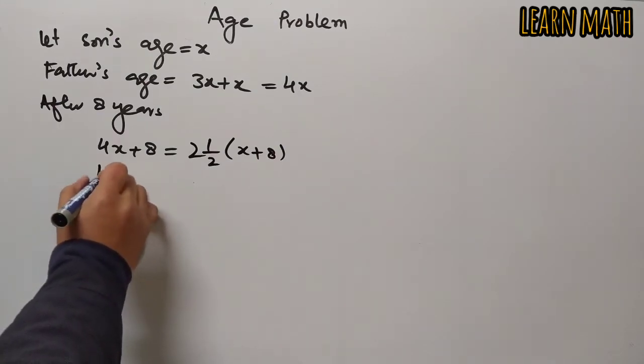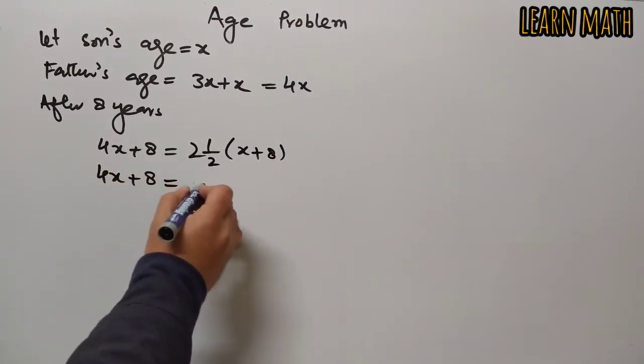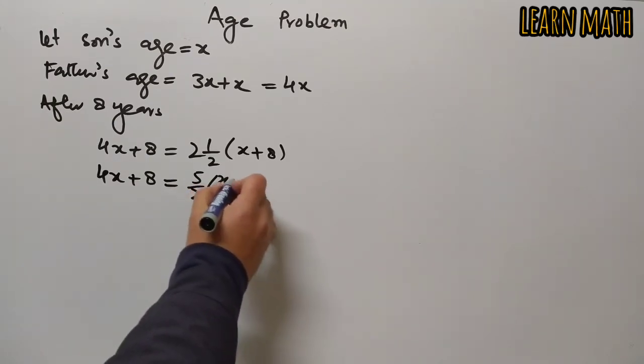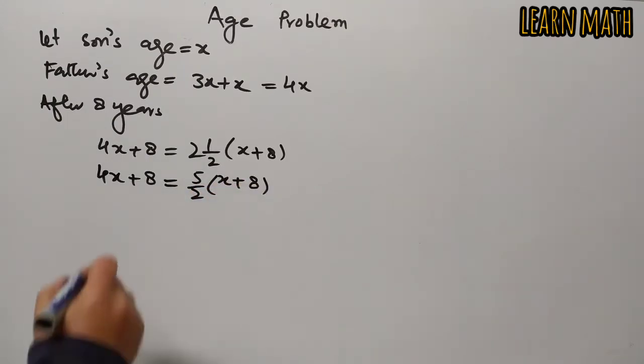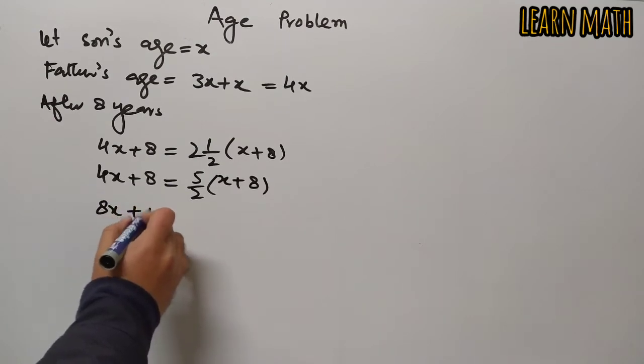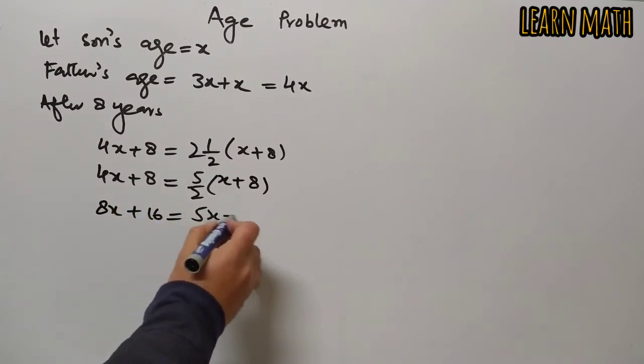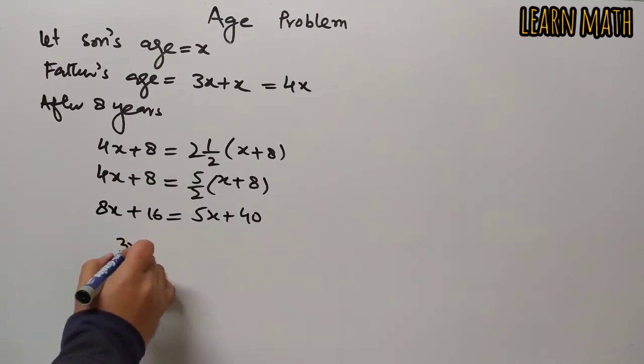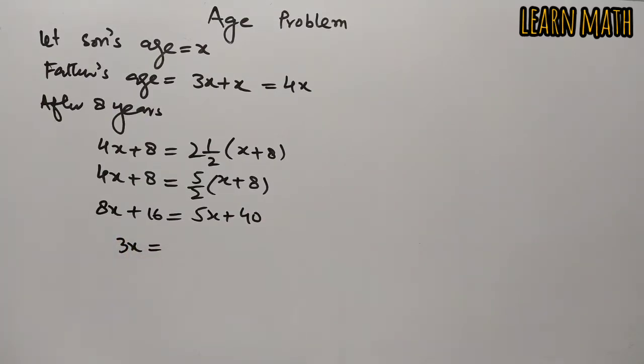Now we will simplify this. So 4x plus 8 is equal to 5 by 2 into x plus 8. Multiply two on the other side, so 8x plus 16 is equal to 5x plus 40, which implies that 3x is equal to 24. So x is equal to 8.